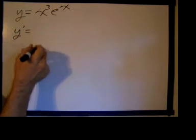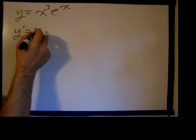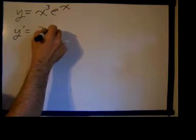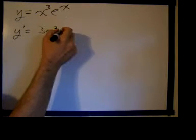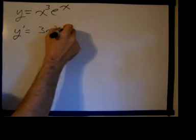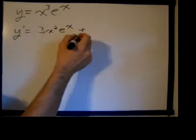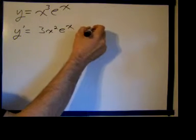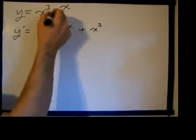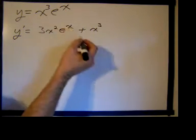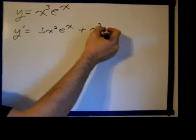So we have y prime equals the derivative of the first term, which is 3x squared, times the second term, which is e to the x, plus the first term, x cubed, times the derivative of the second term. The derivative of e to the x is just e to the x.